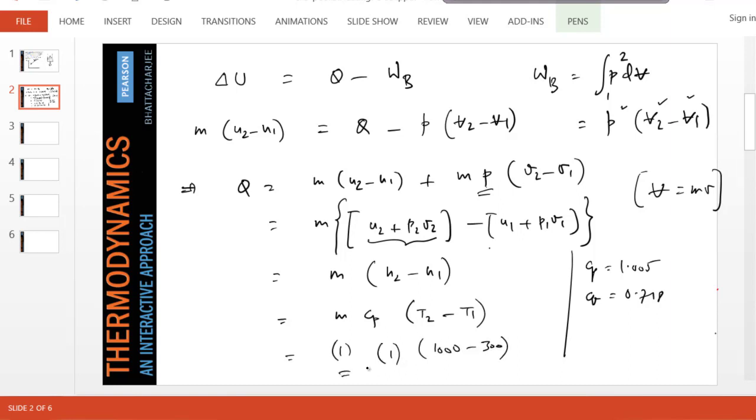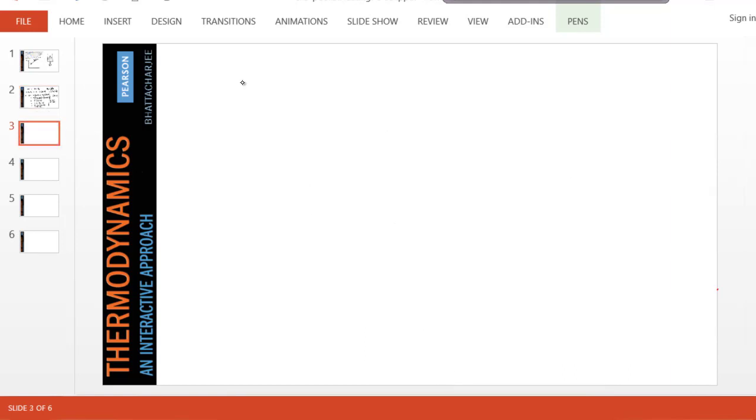And now we can find W, because delta U is Q minus Wb. We can use this equation. Wb would be Q minus delta U. Q we already found, 700, and this is m·cv·(T2 - T1), right?